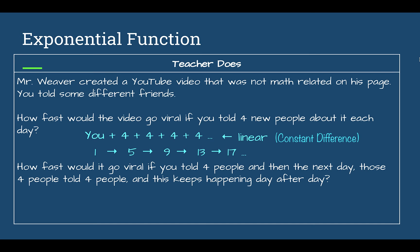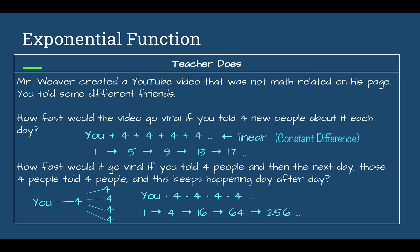Now, how fast would it go viral if you told four people and then those four people each told four people, and that kept happening every day? We are multiplying our total by four each time. You told four people, they told four — now 16. They told four more — 64. Then 256, then 1024. It goes up a lot quicker. This is an exponential function — multiplying by the same amount each time.